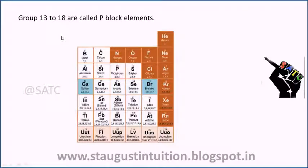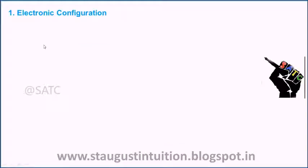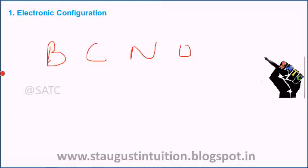Groups 13 to 18 are called P-Block Elements. They are also known as Representative Elements. For example, the electronic configuration of P-Block Elements: the first period includes Boron, Carbon, Nitrogen, Oxygen, Fluorine, and Neon.